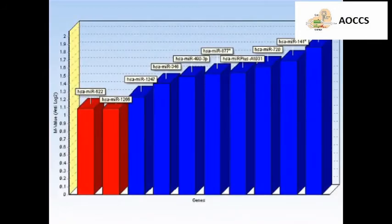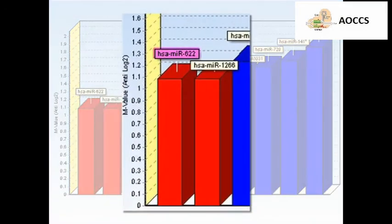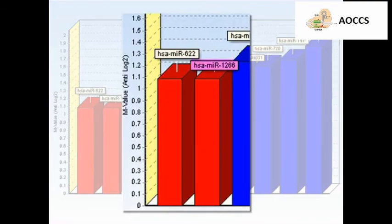This graphic bar was obtained from the GNorm application within GenX to analyze 10 possible microRNA reference genes. These results indicate that MIR-622 and MIR-1266 are the most stably expressed microRNAs.